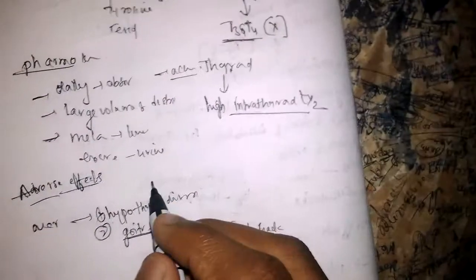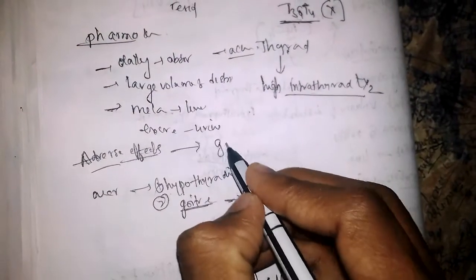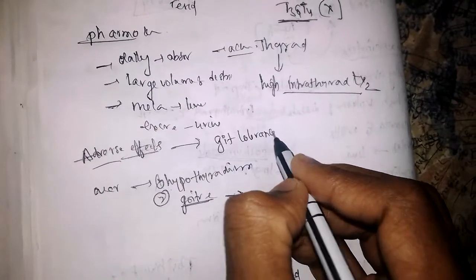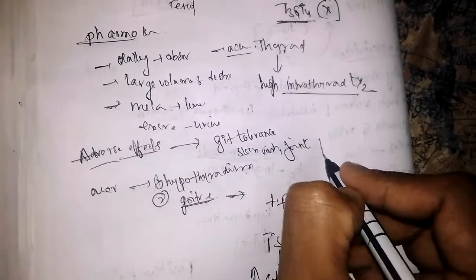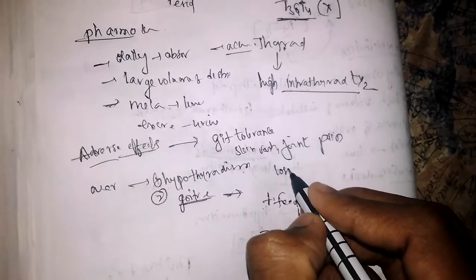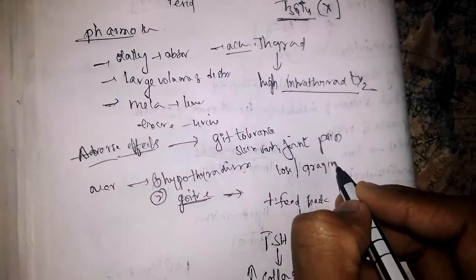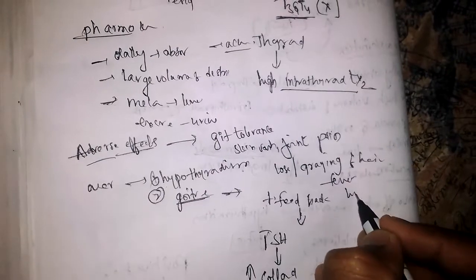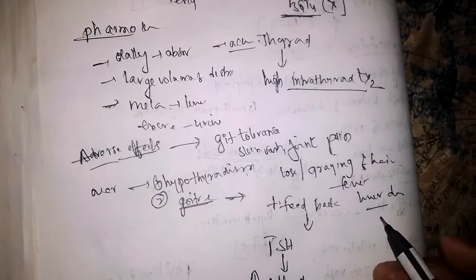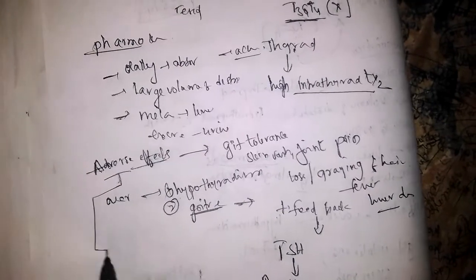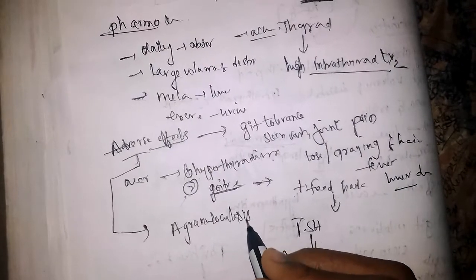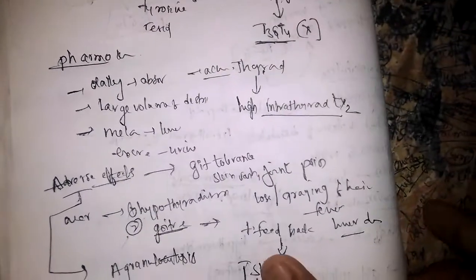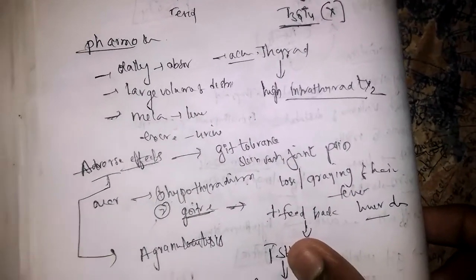Other side effects include GIT intolerance, skin rash, joint pain, loss of hair, graying of hair, fever, and liver damage. One rare but important adverse effect is agranulocytosis. There is also partial cross-reactivity between carbimazole and propylthiouracil.